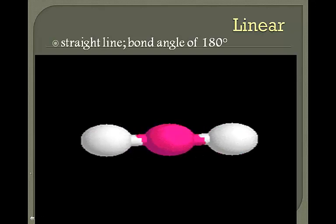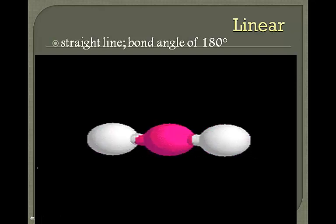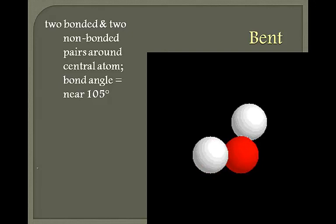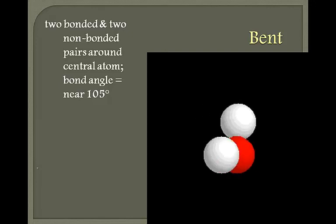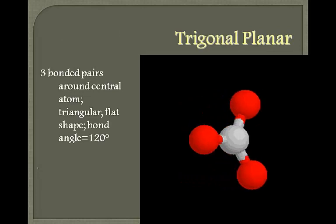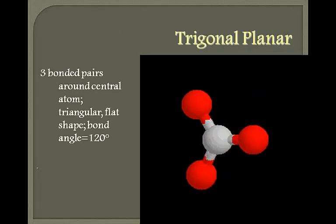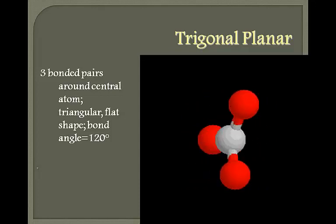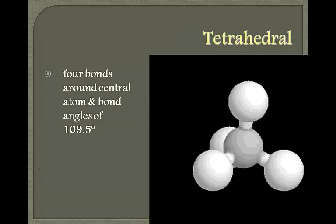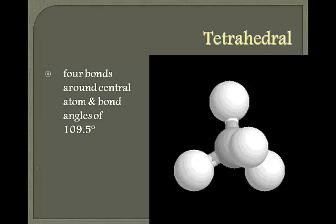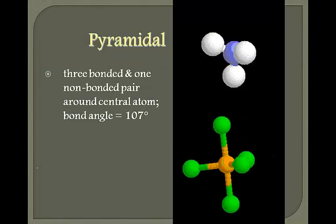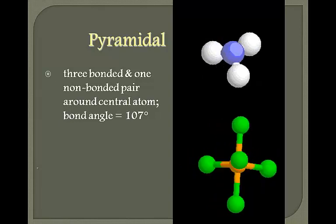Linear molecules are in a straight line with a bond angle of 180 degrees. Bent is when there are two bonded and two non-bonded pairs around the central atom, with a bond angle near 105 degrees. Trigonal planar has three bonded pairs around the central atom — it's flat — with a bond angle of 120 degrees. Four bonds around the central atom is tetrahedral, with a bond angle of 109.5 degrees. Pyramidal has three bonded and one non-bonded pair around the central atom, with a bond angle of 107 degrees.